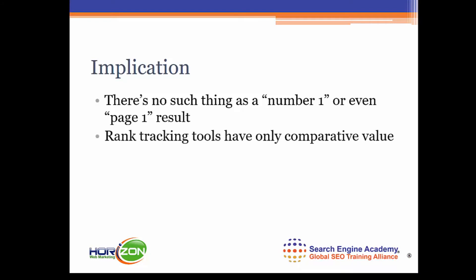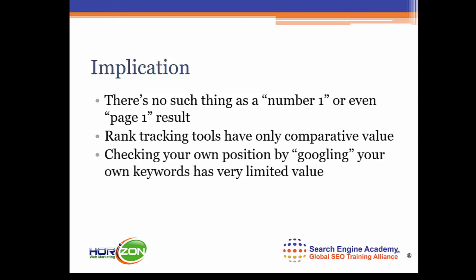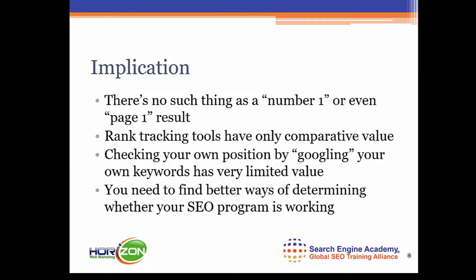That's why it's so hollow when some SEO company comes to you and guarantees you a number one result — there's really no way they can do that nowadays. It also means that rank tracking tools, services that track your position for any given set of keywords, will give you results that don't necessarily indicate what your customers are going to see. Rank tracking tools have limited value — usually only a comparative value, showing whether you're improving or declining over time. Checking your own position by Googling your own keywords also has very limited value, because Google will typically show your own website higher since they know you prefer it. Therefore, you need to find better ways of determining whether your SEO program is working.